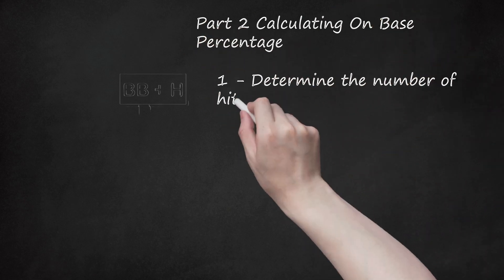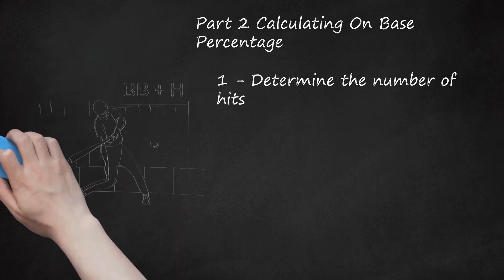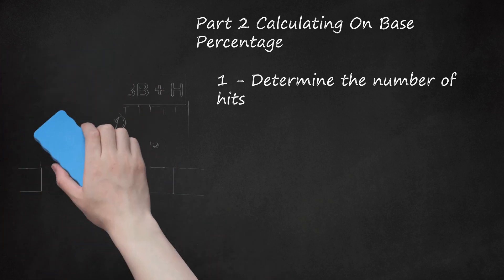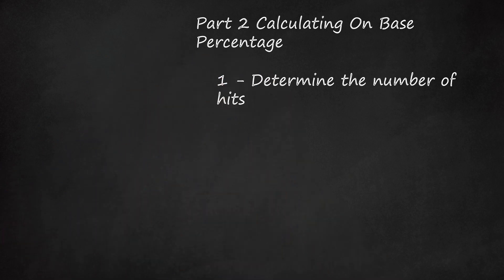Determine the number of hits. Recall that a batter earns a hit, H, when he hits the ball into fair territory and safely reaches first base. As an example, take Charles Cobb Blackman of the Colorado Rockies. Say that when he played against the San Francisco Giants, he scored two hits. In this case, H would equal two.